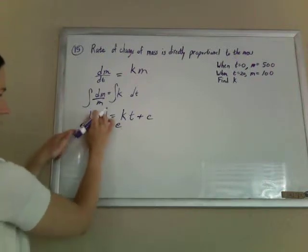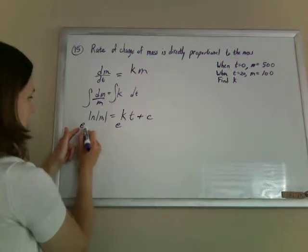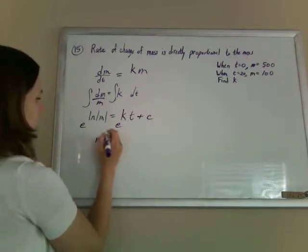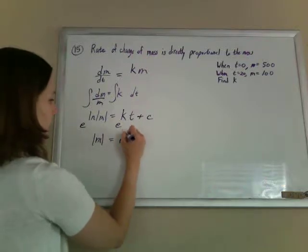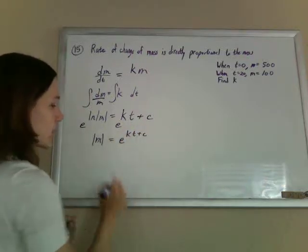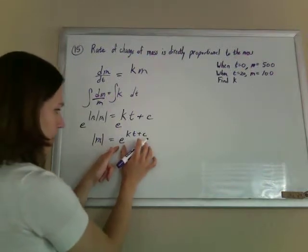Just e both sides to get anti-log of both sides, and so those will cancel out. So absolute value of m will equal e to the kt plus c.